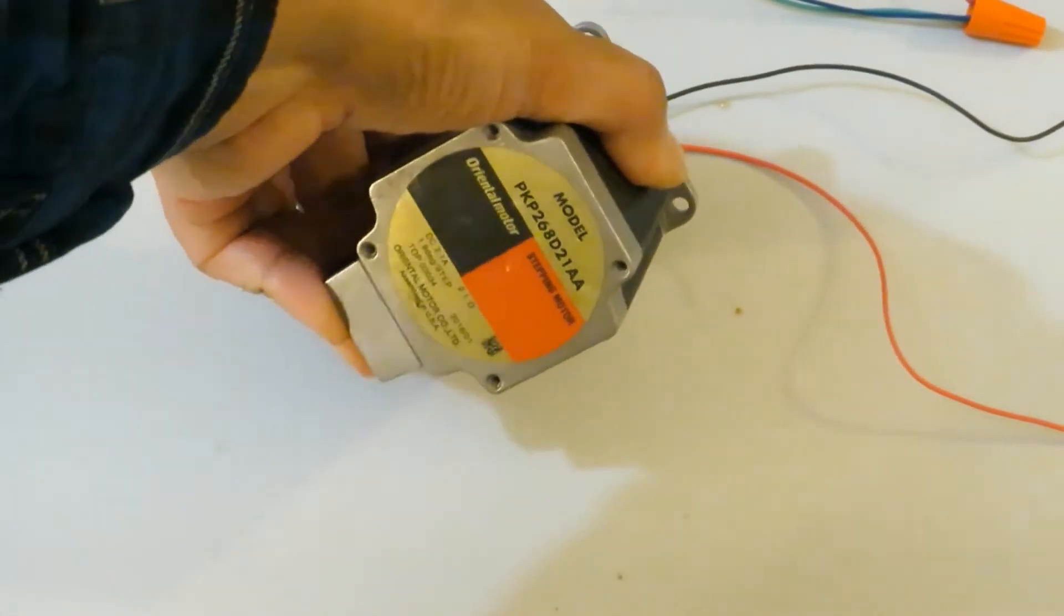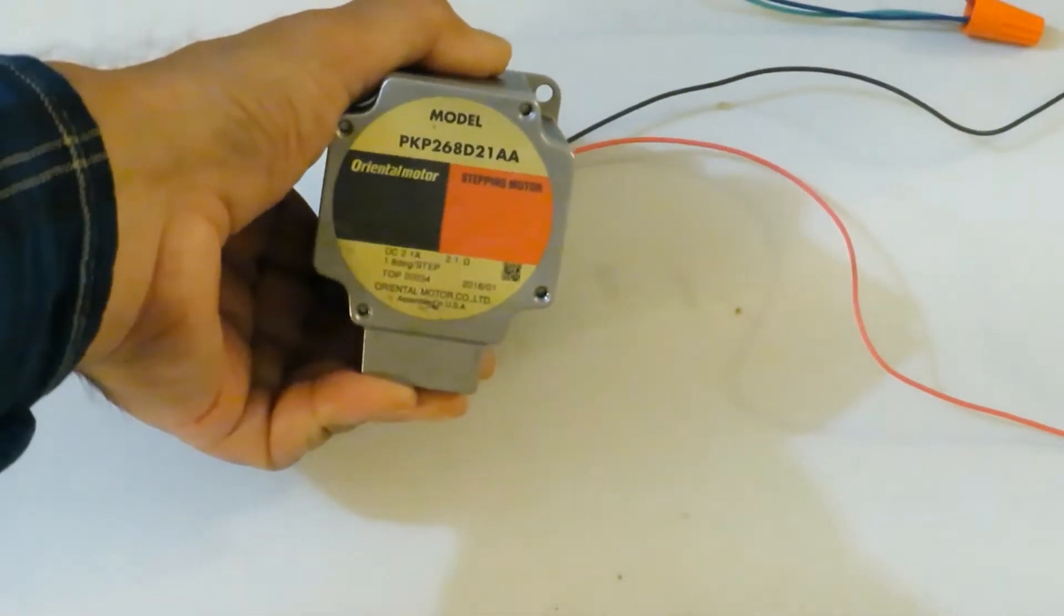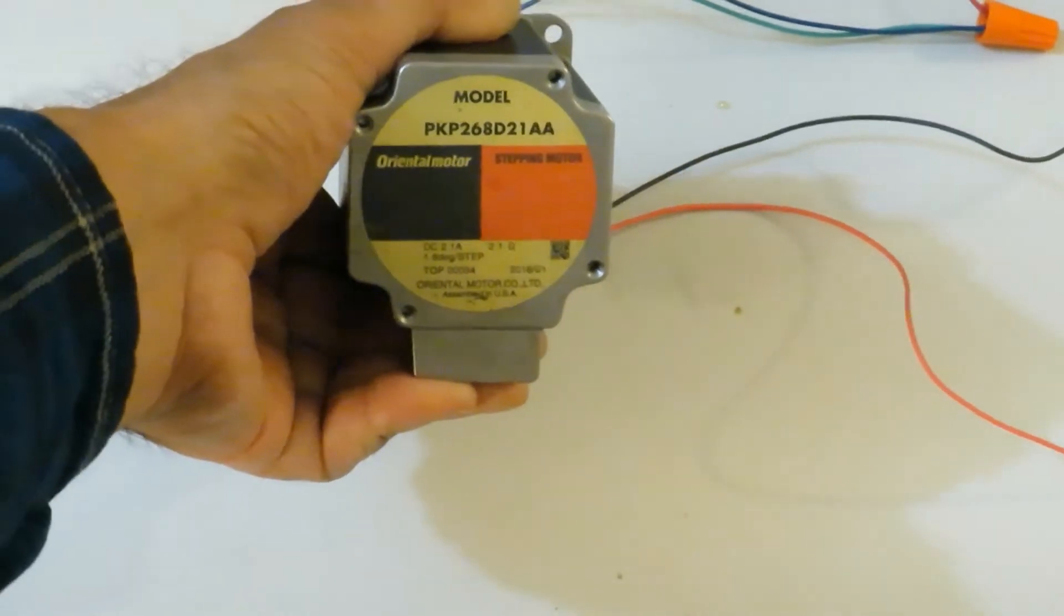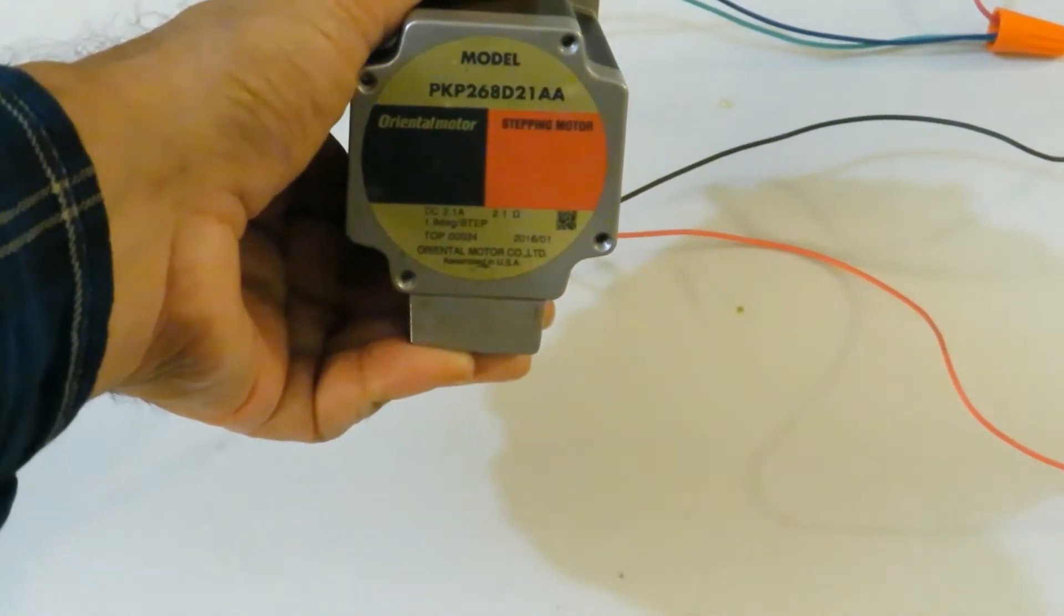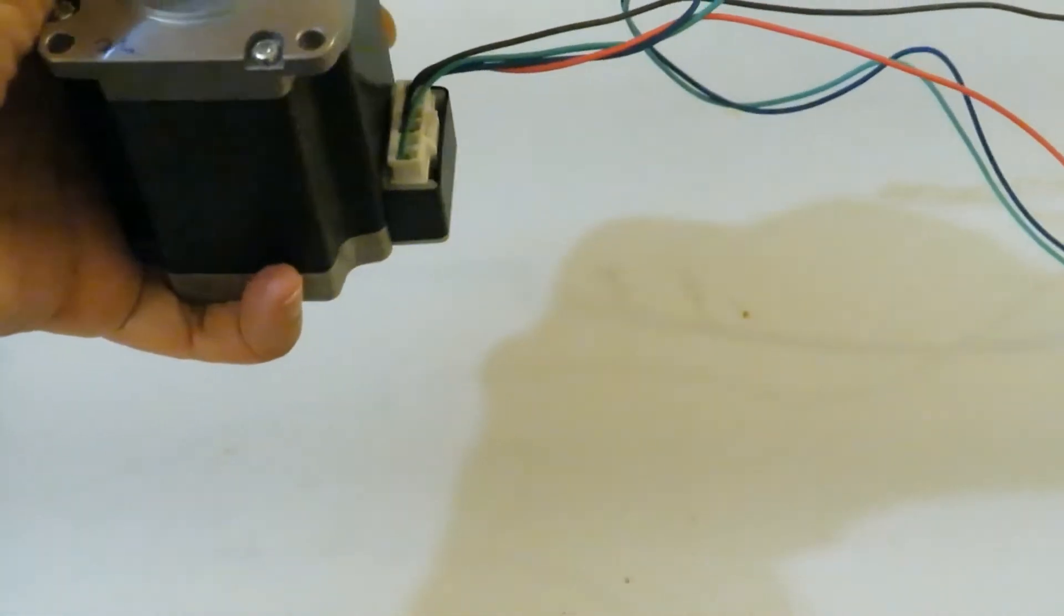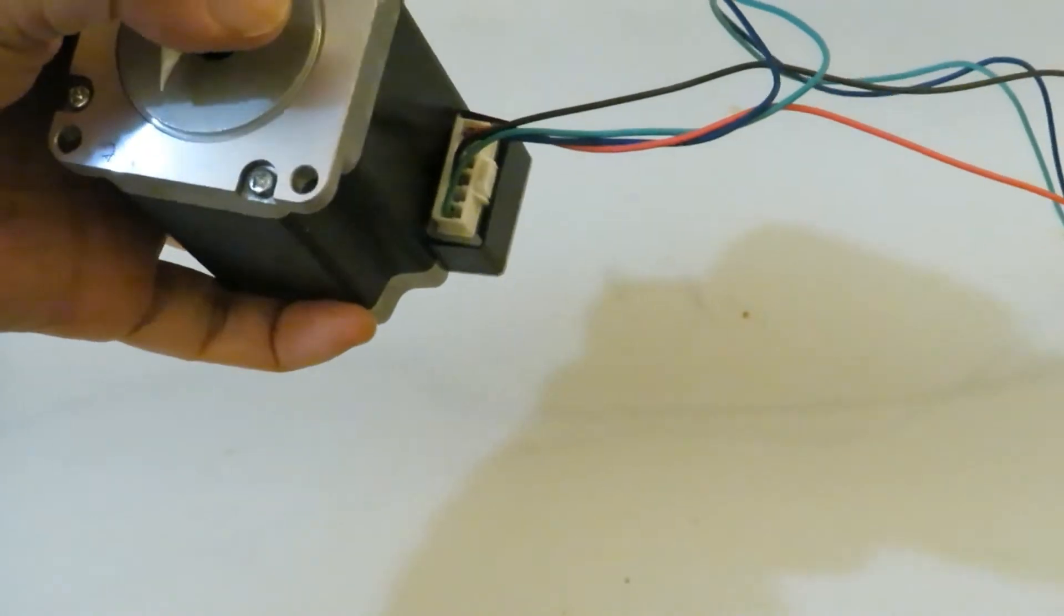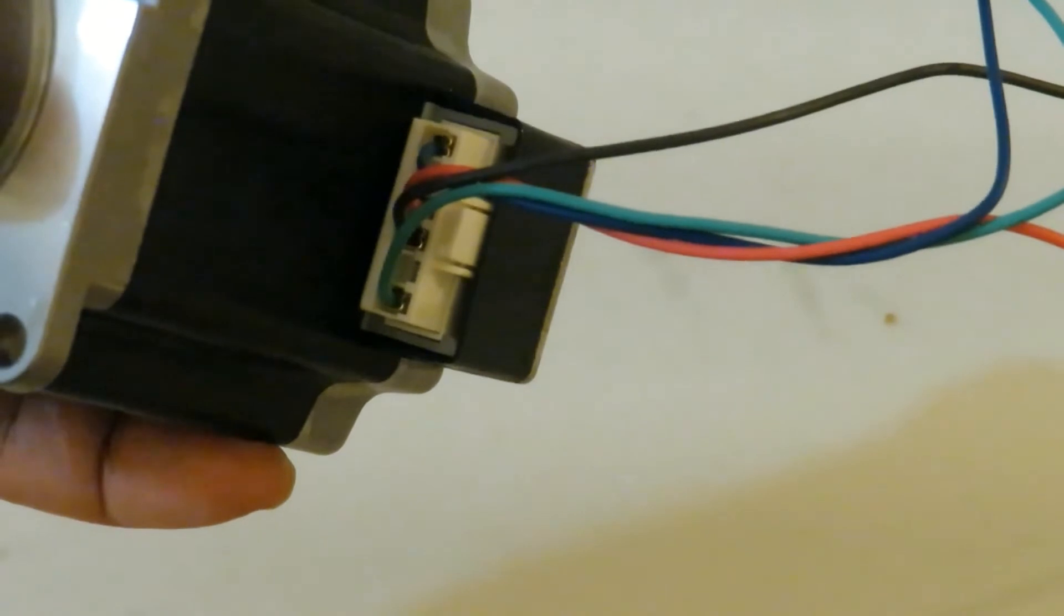This is the stepper motor that I am going to show how to drive. On the back, we can see the model number, manufacturer's name and some other information like angle per step. And here, the two coil terminals, coil A and coil B are shown.